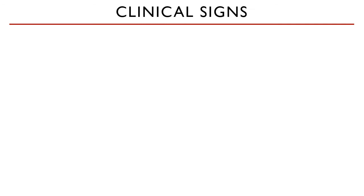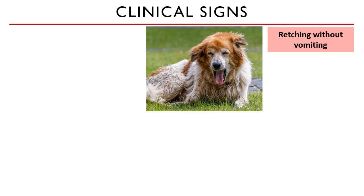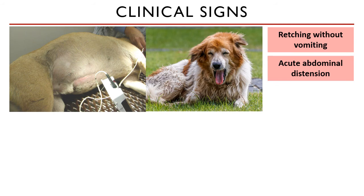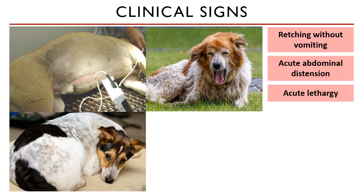Clinical signs reflect gastric dilatation, circulatory compromise, and respiratory compromise, and depend on the duration and severity of the condition. One early sign is retching without vomiting — or unproductive vomiting — because the esophagus is starting to twist so nothing can come out. The most evident sign is acute abdominal distension combined with acute lethargy. A dog can be happily walking with its owner, go home, drink a lot of water, and then just fall to its side. These animals are often well cared for with a good record of veterinary visits, but GDV just happens.